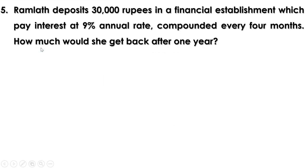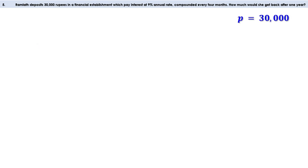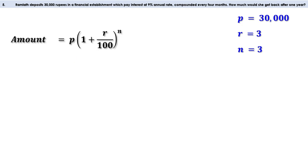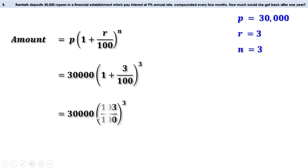Next problem. Ramlet deposits 30,000 rupees in a financial establishment which pays interest at 9% annual rate, compounded every 4 months. How much would she get back after one year? She deposits 30,000 rupees, so P is 30,000. There are 3 periods of 4 months in a year, so R is equal to 9 divided by 3, or 3, and N is equal to 3. The amount is P into (1 + R/100) raised to N. Replacing the values we get 30,000 into (1 + 3/100) raised to 3. Now 1 + 3/100 is 103/100, so this is 30,000 into (103/100) raised to 3.